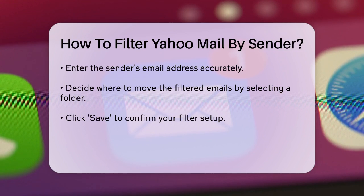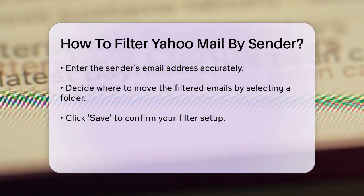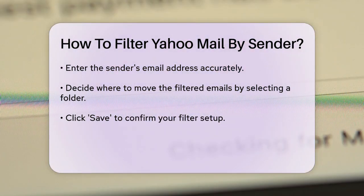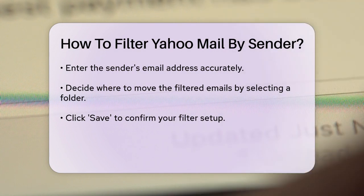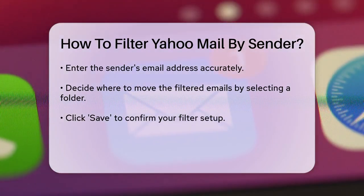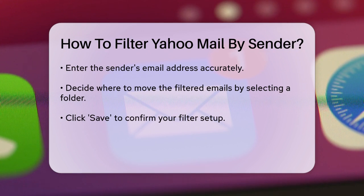If you want to create a filter directly from an email, you can do that too. Open the email from the sender you want to filter, click the three dots at the top toolbar, and select Filter messages like this. Then choose the folder where you want to move these emails and click Save.